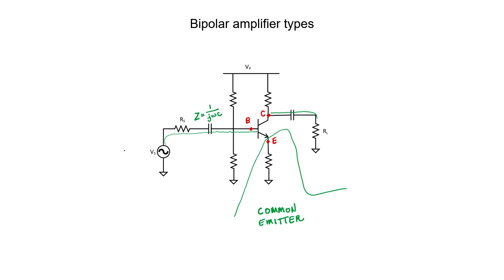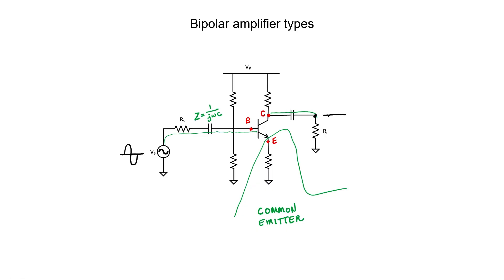Let's start with the common emitter configuration. Let's say that our input starts off by swinging high and then swings low — it's an AC signal, so part of the time it's above zero and part of the time it's below zero. How is that signal going to show up at our load? It's going to be a pure AC signal at the load resistor because it's grounded and the other side of the load resistor has a capacitor, making it impossible for any DC signal to appear across it. But when the source swings positive, does the load voltage also swing positive, or does it swing negative? In other words, is this amplifier non-inverting or inverting? For common emitter, it's inverting — if the source swings high, the load is going to swing low, and vice versa.